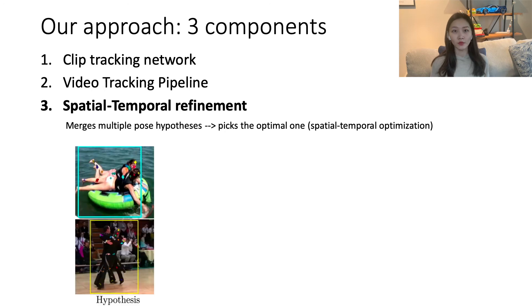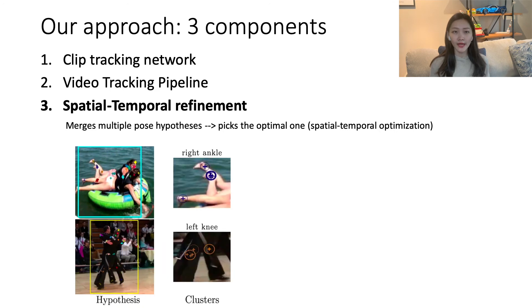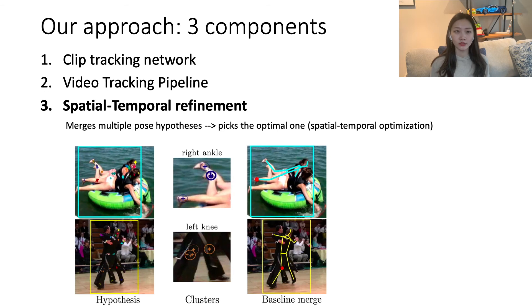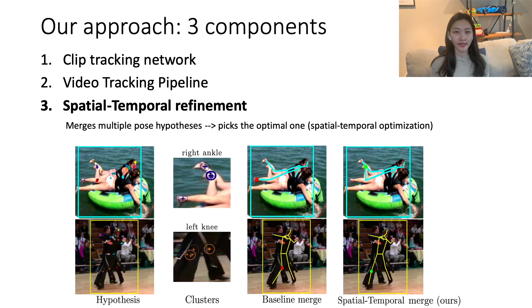Spatial-temporal refinement merges these multiple-pulse hypotheses and selects the optimal one. Here are two examples in which the multiple hypotheses of a joint are visualized with the same color. Due to occlusion and entanglement, some hypotheses are actually wrong, and selecting the hypothesis with the highest confidence score can lead to wrong predictions, like the cases here for right ankle and left knee. Instead, our refinement procedure uses an optimization algorithm to select the more spatially and temporally consistent hypothesis for each joint, leading to overall better predictions.